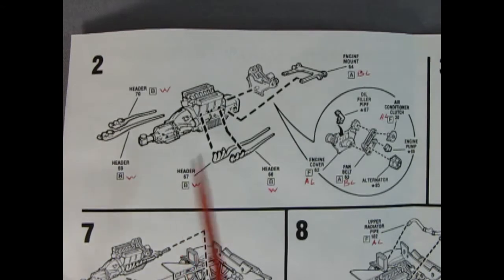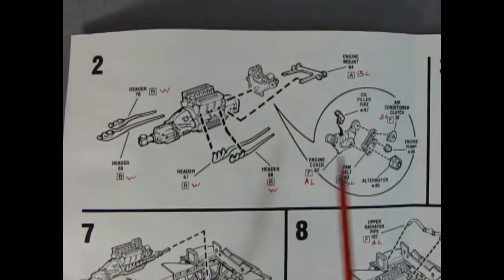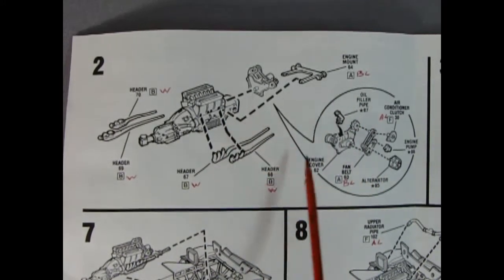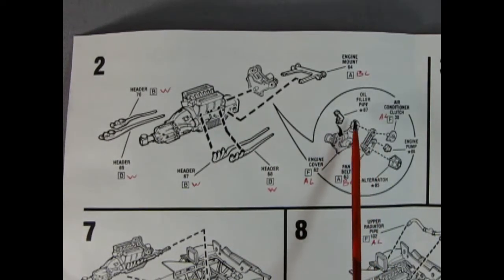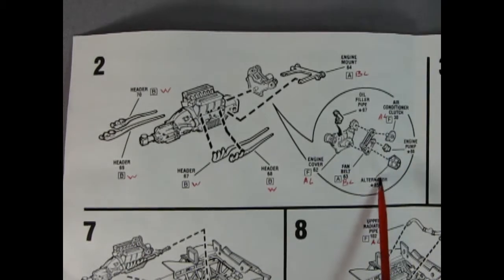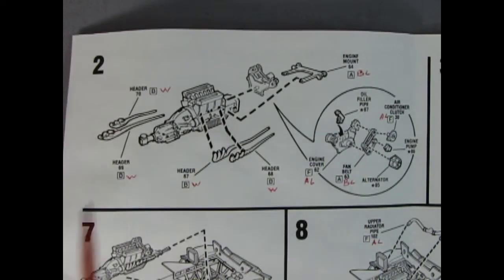Panel two shows our exhaust manifolds being glued on - you get four of them. Then we've got this elaborate engine mount. That's our engine cover, oil filler pipe, air conditioning unit, engine pump, and alternator and fan belt. Those all glue together and then glue to the front of the engine.